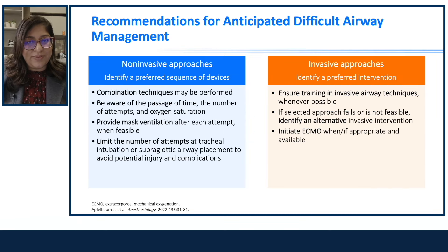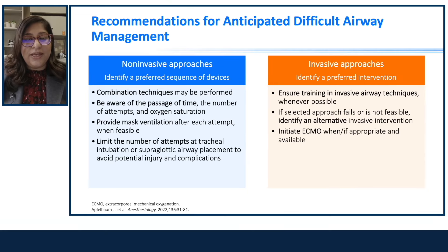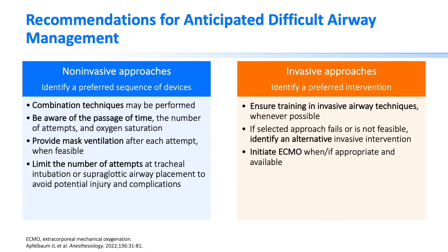For anticipated difficult airway management, identify a preferred sequence of devices, as combination techniques may be more successful. Be aware of passage of time, number of attempts, and oxygen saturation. Provide mask ventilation after each attempt when possible, and limit the number of intubation attempts to avoid injury. For invasive approaches, identify a preferred intervention, ensure proper training in invasive airway techniques, always have a Plan B, and initiate ECMO when appropriate and available.